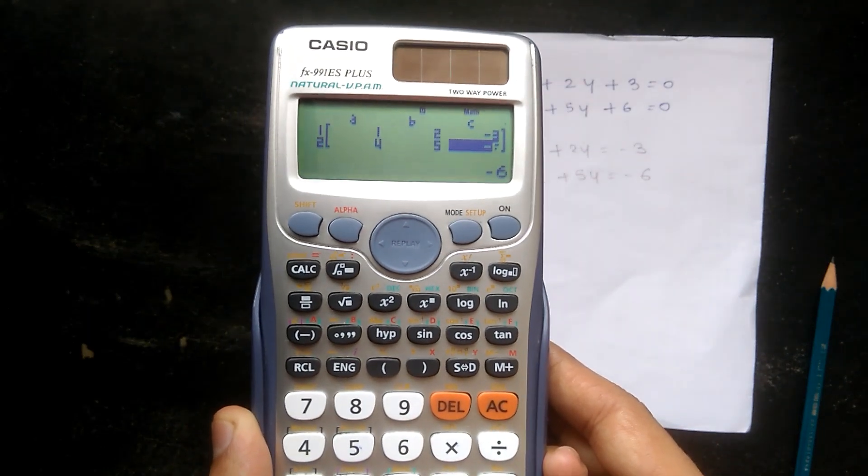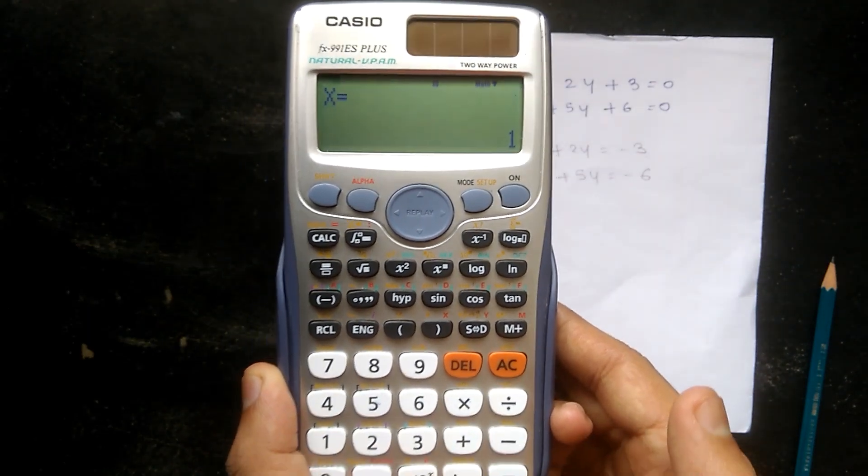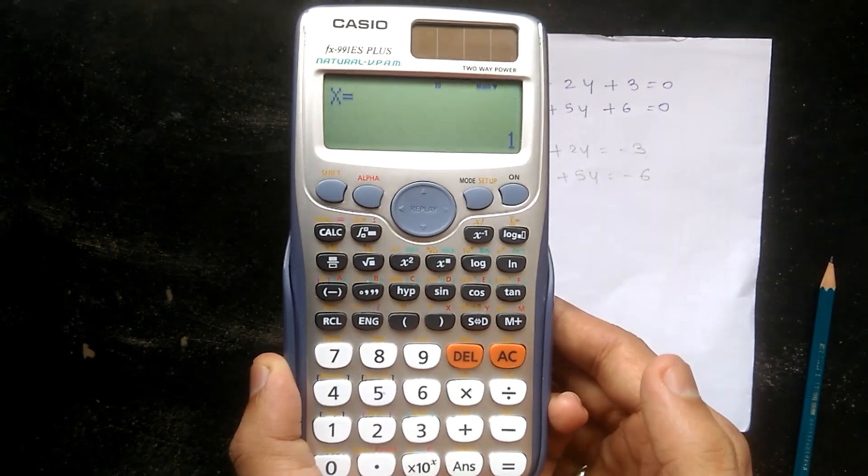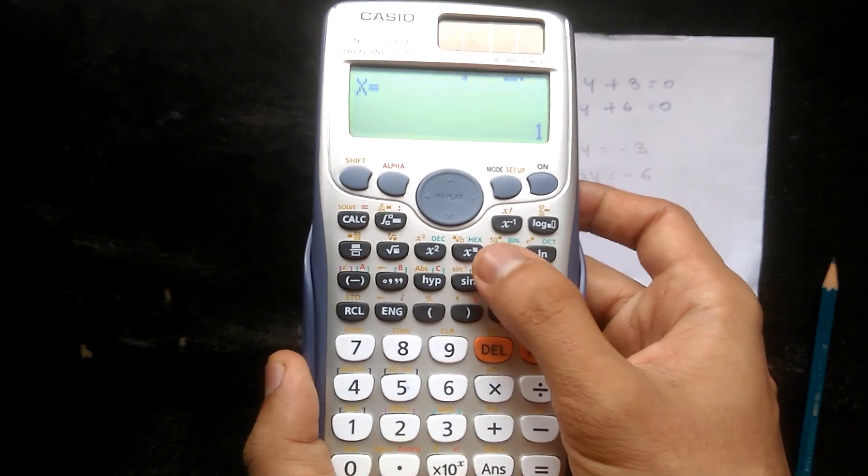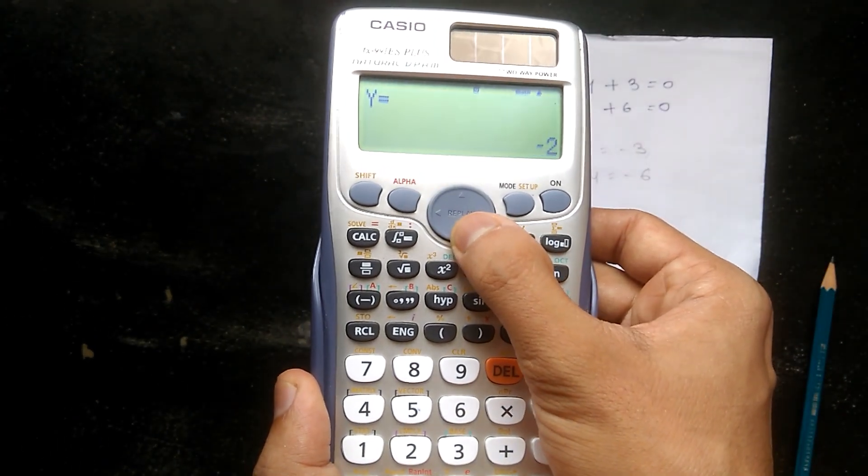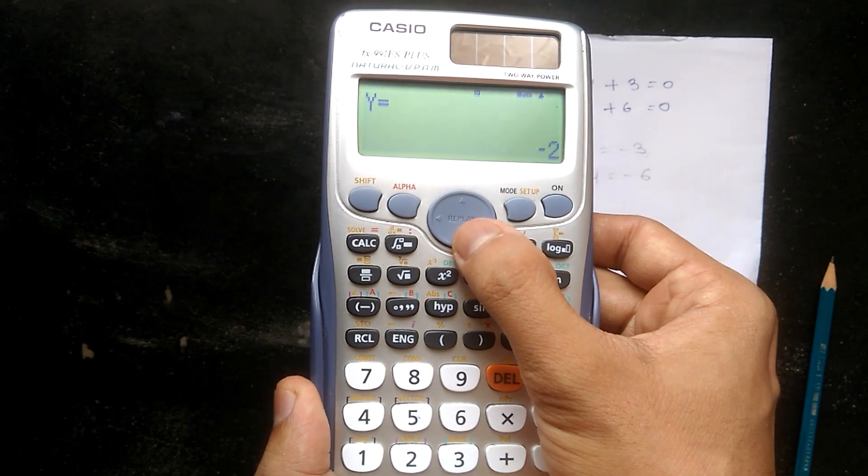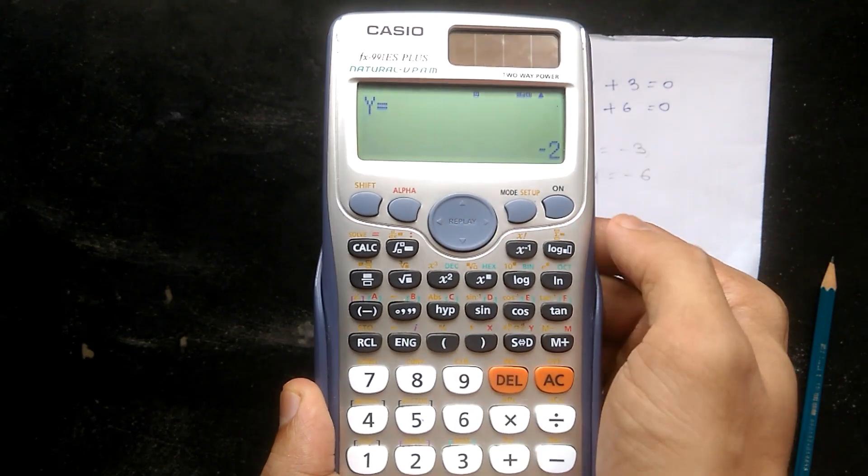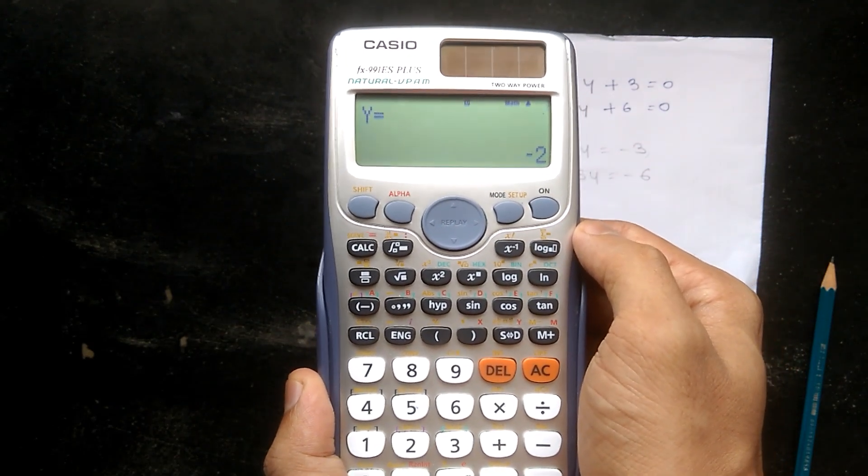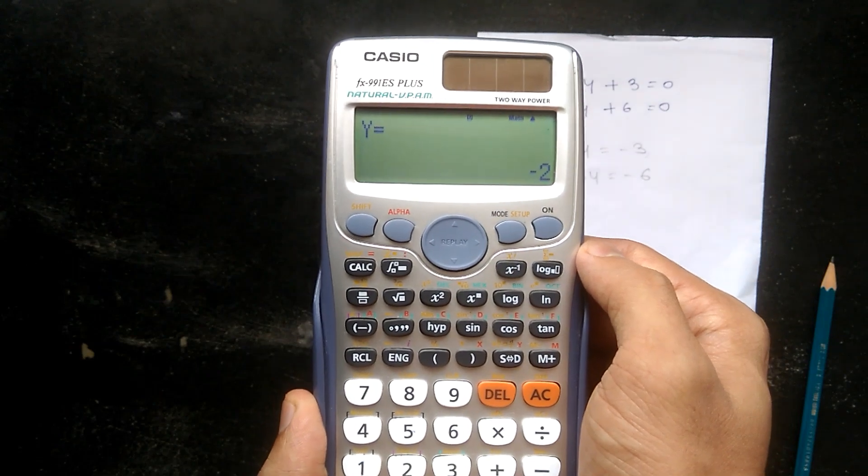Then again press the equal button to get the final answer. We got the x value as 1 and the y value as minus 2. In this way we can solve any linear equation with two variables using this calculator.